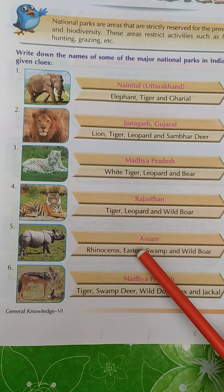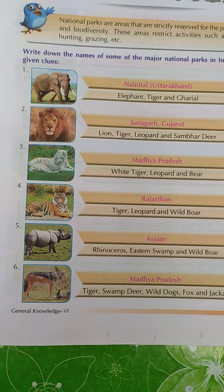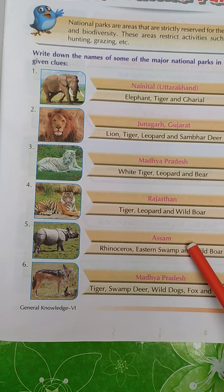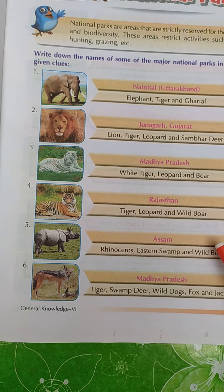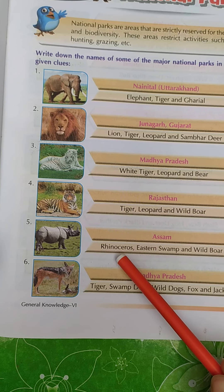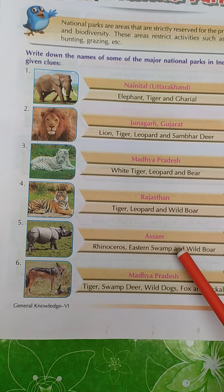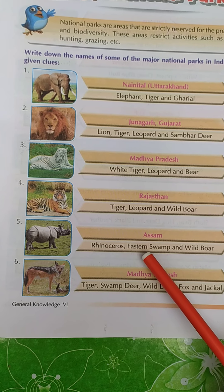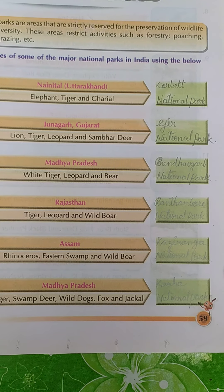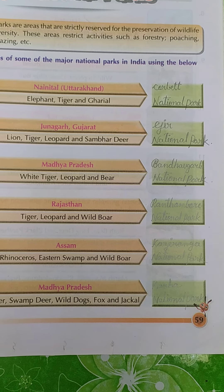Number five. The state where this park is located is Assam. The animals are rhinoceros, swamp deer, and wild boar. The name of this national park is Kaziranga National Park.